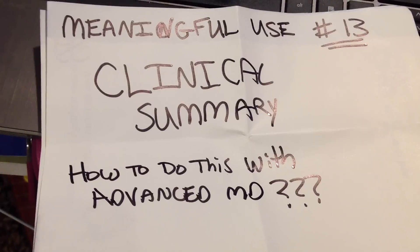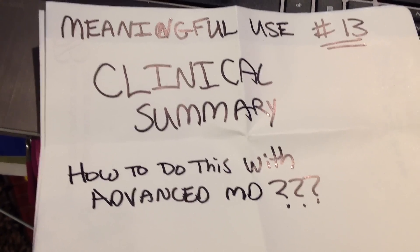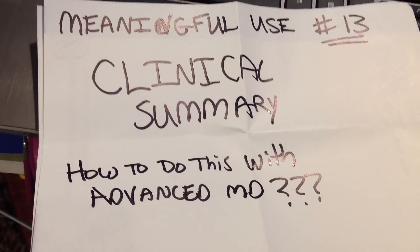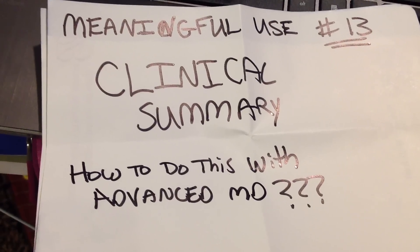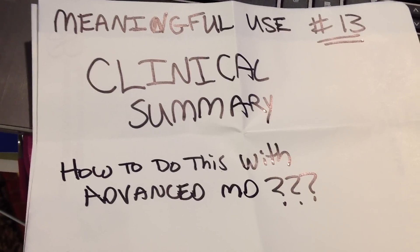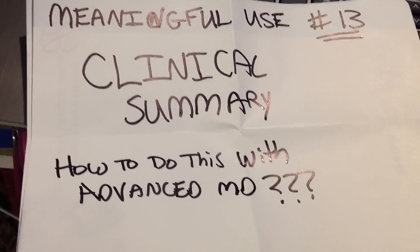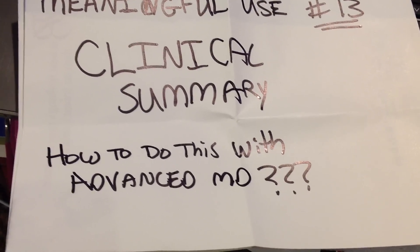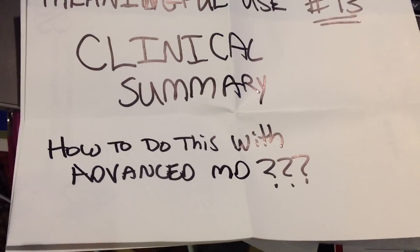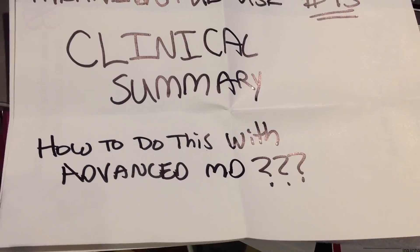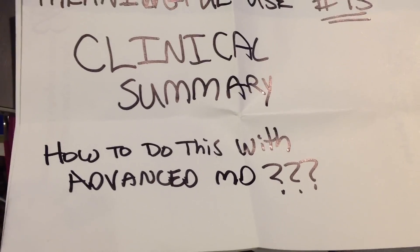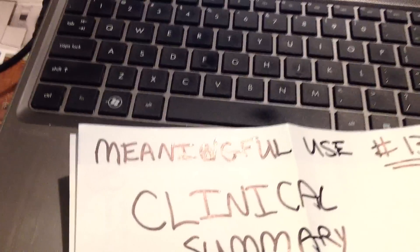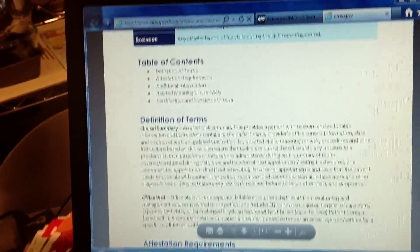A clinical summary is basically a document provided to the patient after a visit. It should contain relevant information and instructions including the name, office contact information, date and location of the visit, any updated medications, updated vitals, reasons for the visit, and basically what took place during the visit — to hopefully improve patient care.